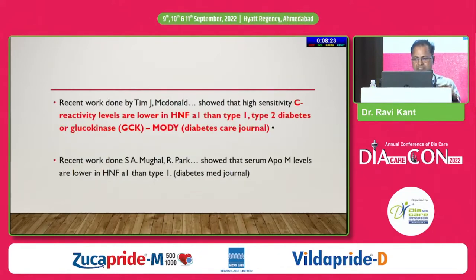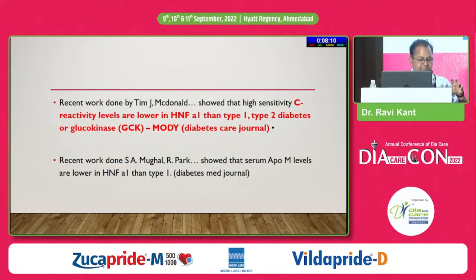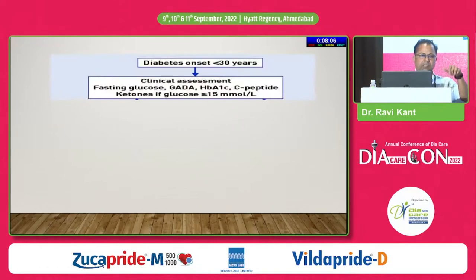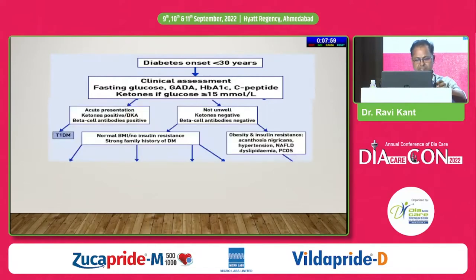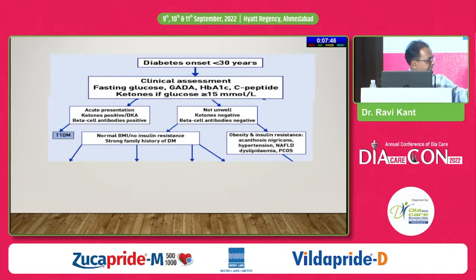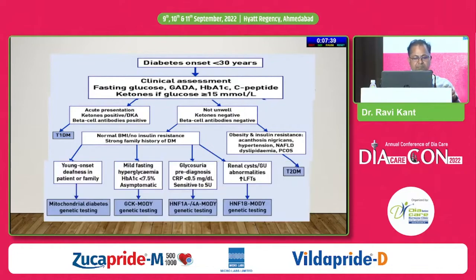Recent work by Tim Jay and colleagues has shown that CRP is markedly low in patients with HNF1-alpha mutations compared to type 1, type 2, or glucokinase MODY. They have incorporated this into the algorithm for sub-classification of diabetes in the young. The algorithm states: if the patient is less than 30 years, go for clinical assessment — HbA1c, C-peptide, ketones. If presentation is acute, this is type 1. If ketone-negative and beta cell antibodies are negative: if obese with insulin resistance, this is type 2; if normal BMI with no insulin resistance and strong family history, you have MODY. Sub-classification of MODY can be done by genetic testing only.